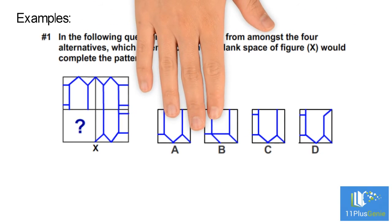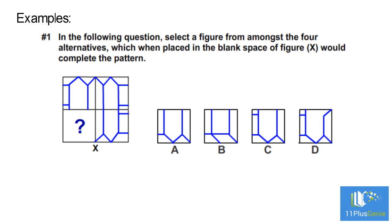Example number one: In the following question, select a figure from among the four alternatives which, when placed in the blank space of figure X, would complete the pattern. This is the line of symmetry.